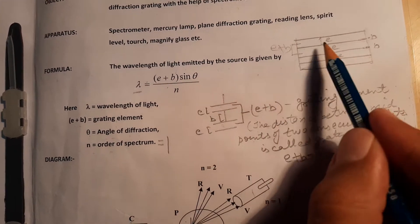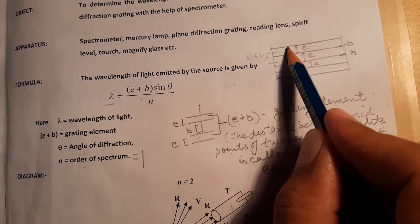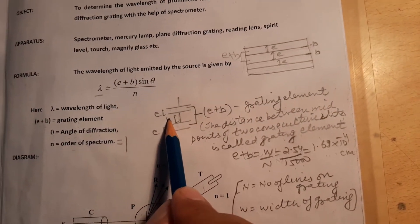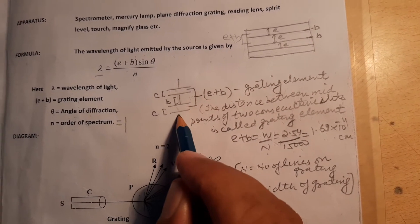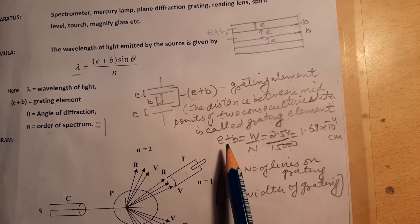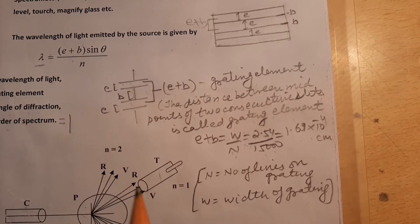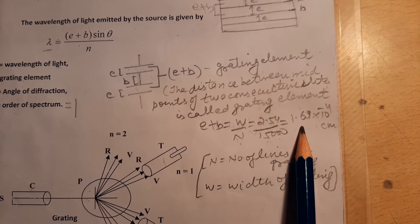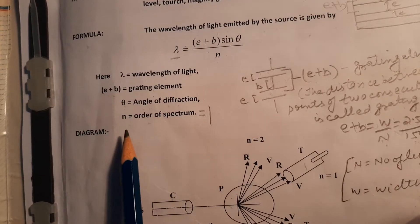The grating element: E is the distance between the ruled lines, called the width of the slit, and B is the opaque portion. The distance between the midpoints of two consecutive slits is called the grating element E plus V, which equals W upon N, where W is the width of the grating and N is the number of lines on the grating. We are using 15,000 lines per inch, so E plus V equals 2.54 cm divided by 15,000, which equals 1.69 × 10⁻⁴ cm. Theta is the angle of diffraction, and N is the order of the spectrum — here N equals 1.